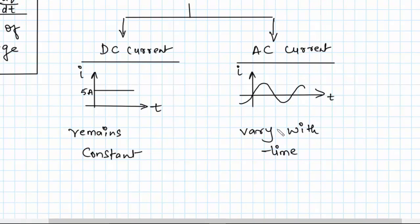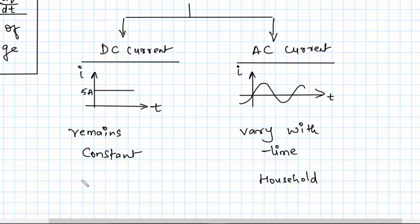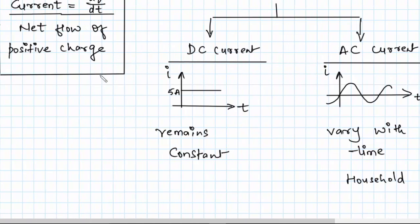This type of current, that is AC current, is used in our household supply. When you run your television, refrigerator, or air conditioner, basically we are using AC current. DC current is basically used in batteries.